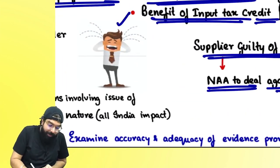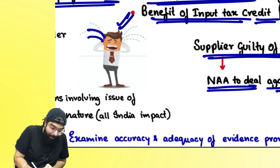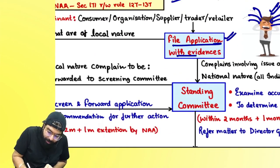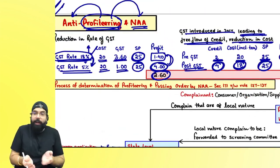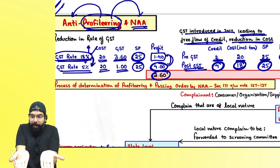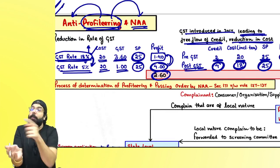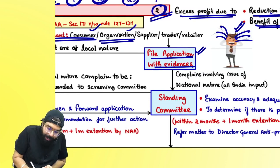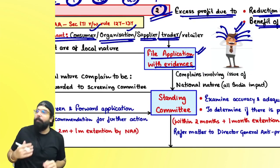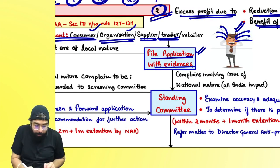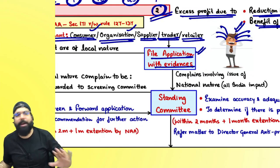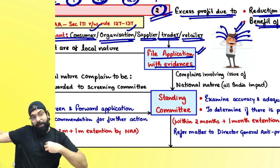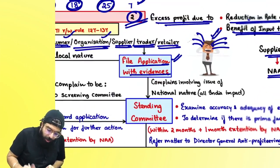Suppose Rakesh is unhappy — the uncle did not reduce the price. What will Rakesh do? Rakesh will go ahead and file an application with evidence — earlier when GST rate was 18% masala dosa was 25 rupees, now GST rate is 5% and masala dosa is still 25 rupees — this shopkeeper is doing profiteering. Complaint for profiteering can be filed by a consumer, an organization, any supplier, or a trader — anyone who is hurt.